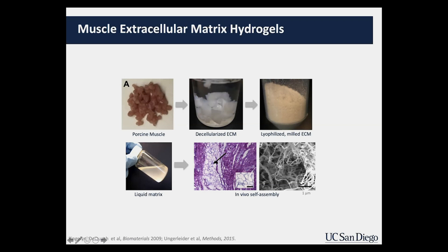What's really interesting is that when you take this liquid and inject it back into a diseased tissue, it forms a porous and fibrous scaffold very similar to the original extracellular matrix. This inset here shows the isolated extracellular matrix before processing, and you can see the architecture — the pores and fibers — is actually quite similar. Under an electron microscope, our ECM hydrogels show a nanofibrous architecture at the same size scale as native extracellular matrix.